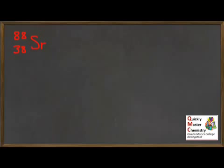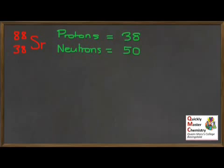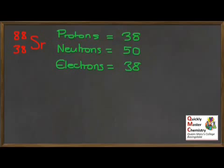Here's a further opportunity to practice — we'll look at both the atom and the ion of strontium. For the atom, how many protons, neutrons and electrons? Pause the video and work it out. The answer should be 38 protons from the atomic number, 50 neutrons from the mass number minus the atomic number, and 38 electrons from the atomic number again.